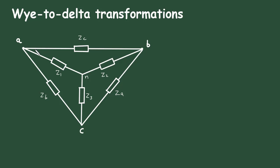Here we can see this inner connection is called as Y connection. This Z1, Z2 and Z3 forms a Y connection because it looks like Y, so that's why it is called as Y connection or star connection. And here the outer part ZA, ZB and ZC.